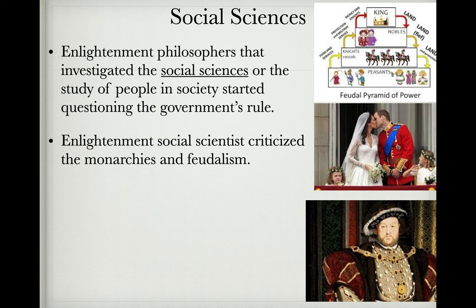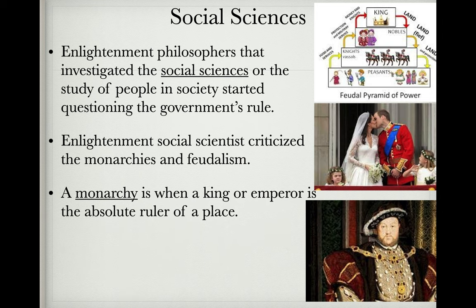You have to understand the founding fathers are very much influenced by these Enlightenment philosophers like Locke. We'll also learn about Voltaire and Jean-Jacques Rousseau. What we see is that the social scientists started criticizing — these Enlightenment philosophers really started criticizing the economic systems and especially the government forms at the time, because the main government form was a monarchy where the king or emperor is the absolute ruler. Thomas Hobbes, for example, thought that people really are nasty and competitive, and that's our nature, and maybe we do need an absolute monarchy or a strong ruler. That's one argument, but Locke is not going to buy that as much.